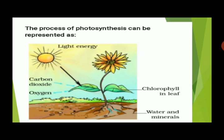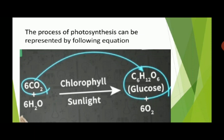The food prepared by the green leaves of a plant is in the form of a simple sugar called glucose. This glucose synthesized in the leaves is then transported to the different parts of the plant. The extra glucose is changed into a complex carbohydrate called starch, which is stored in the leaves and other parts of the plant.